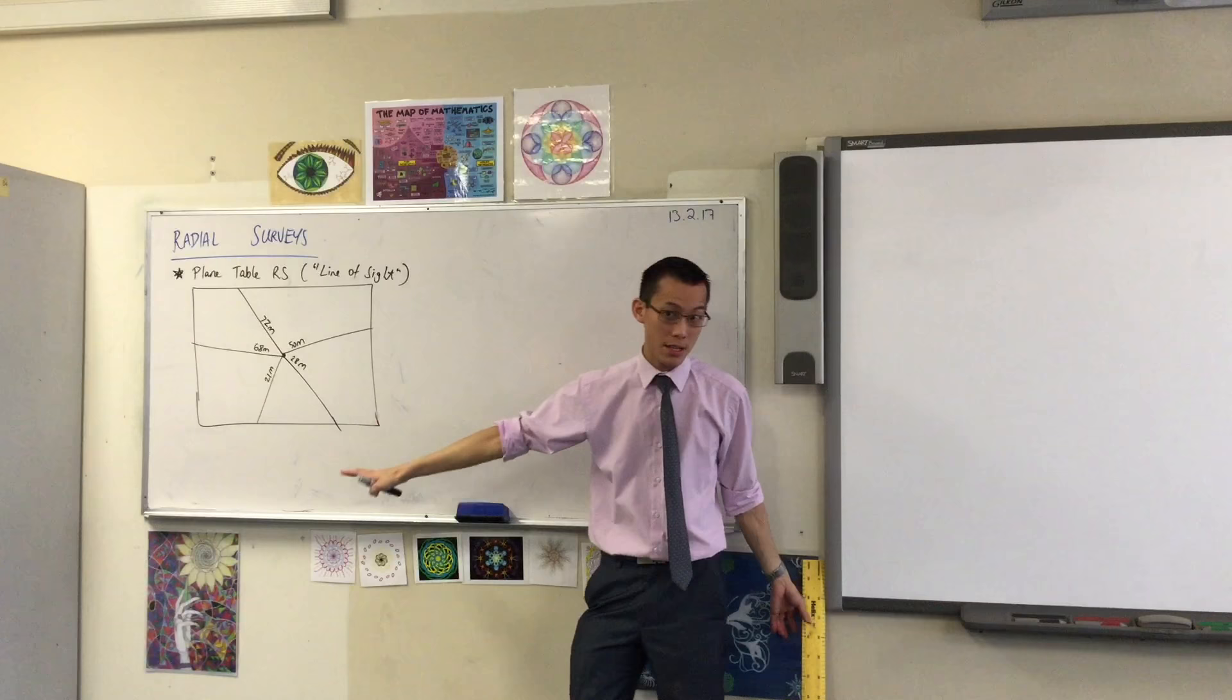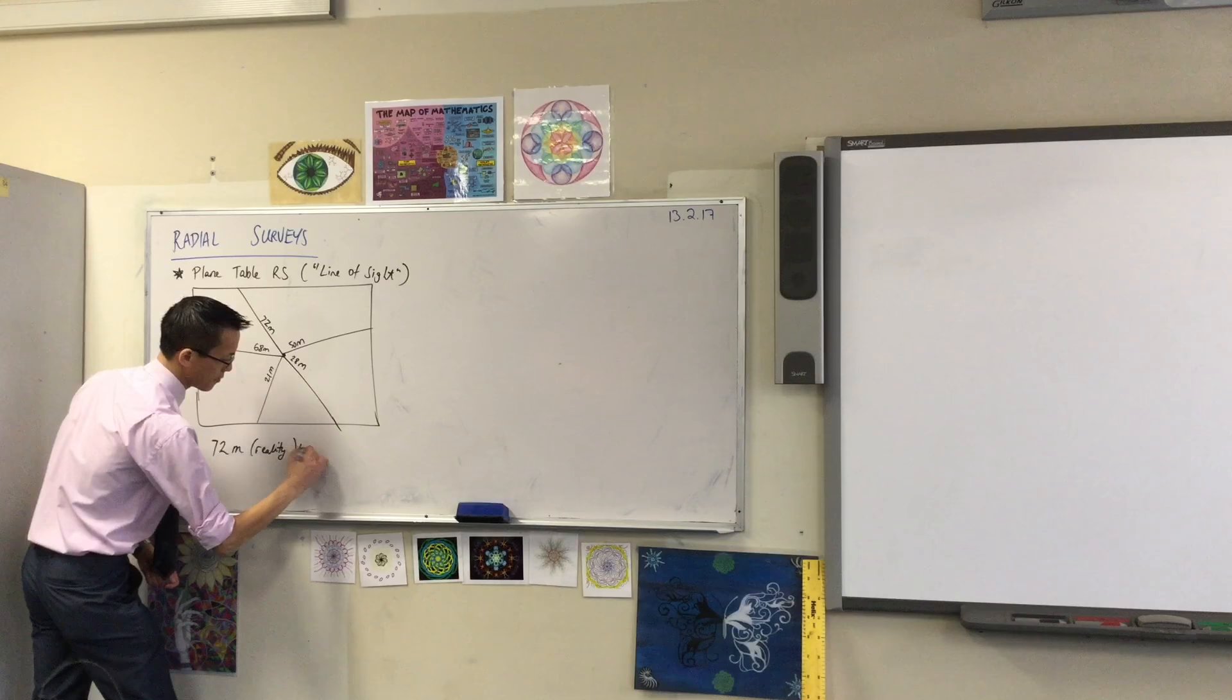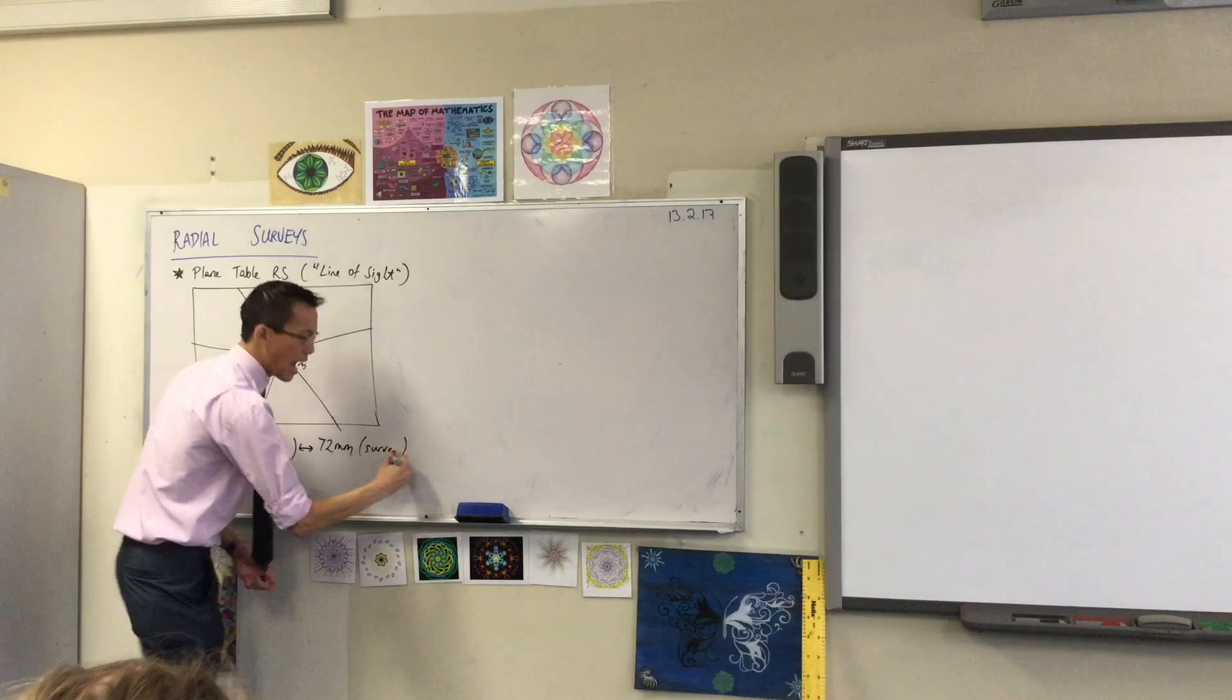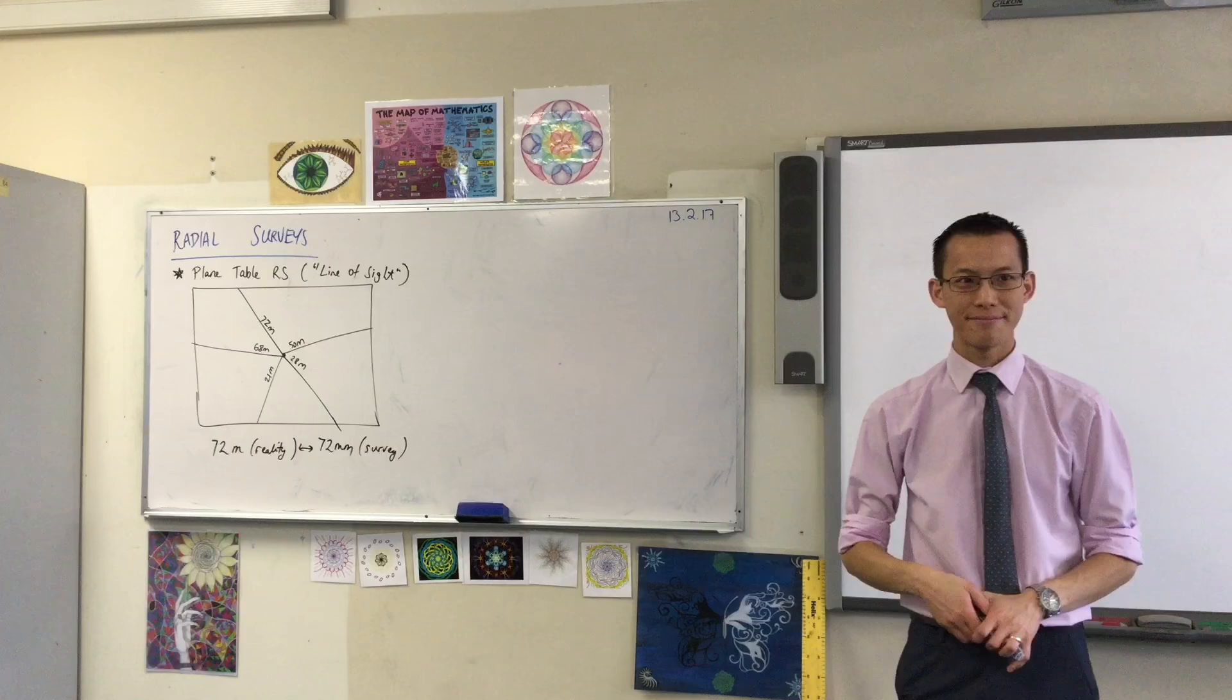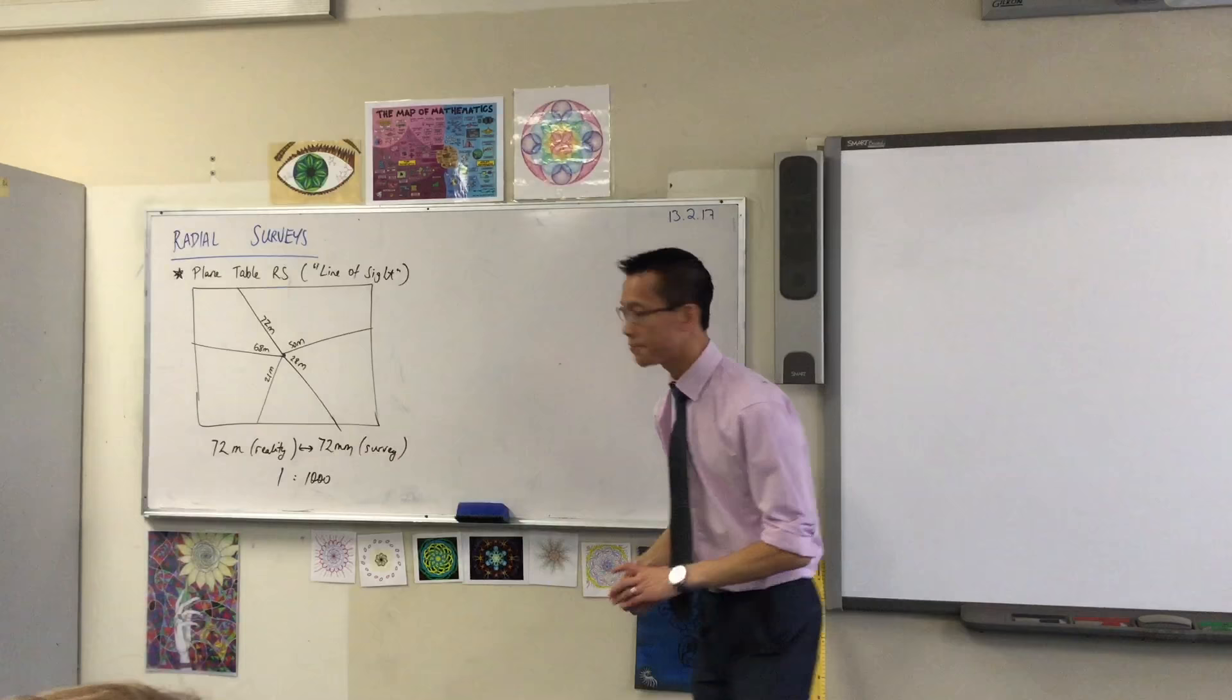If I'm going from 72 meters to 72 millimeters, I'm going to write that. How many millimeters are there in a meter? Exactly 1,000. So my scale here is, and this is a very common scale, is 1 to 1,000. That'll become important a bit later on.